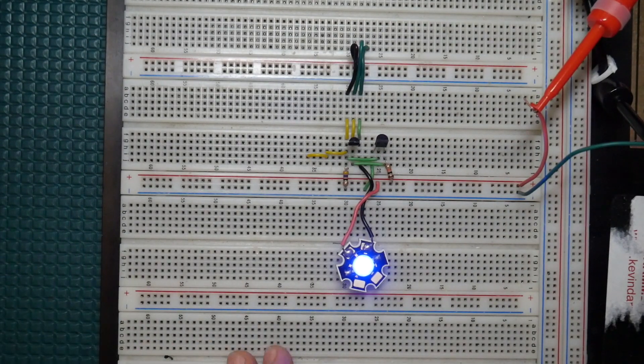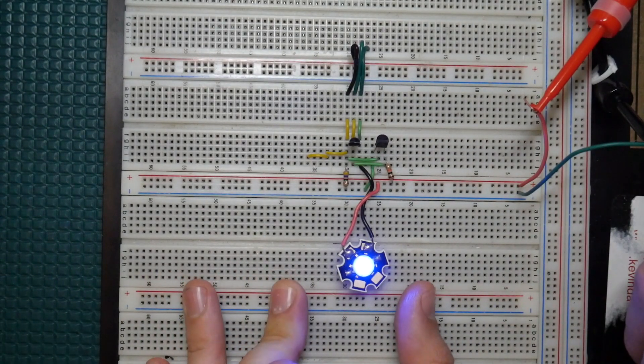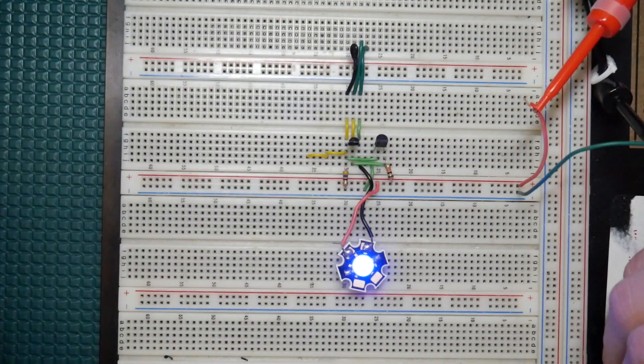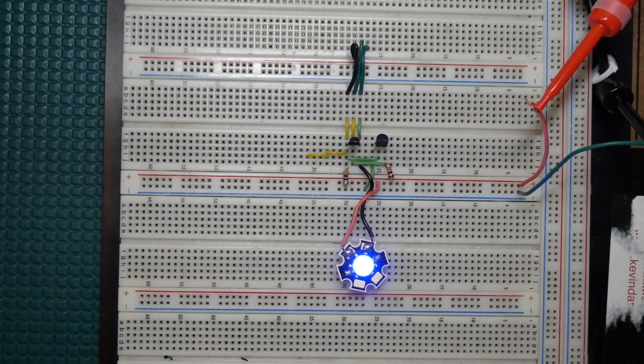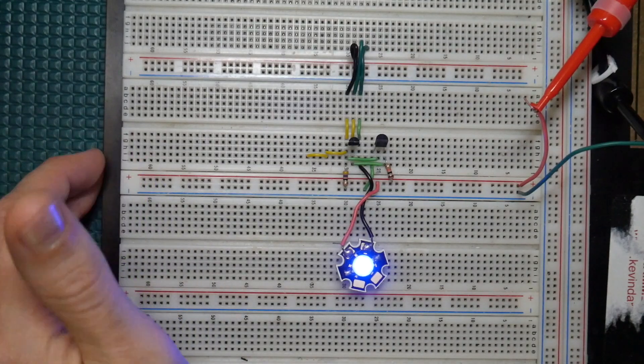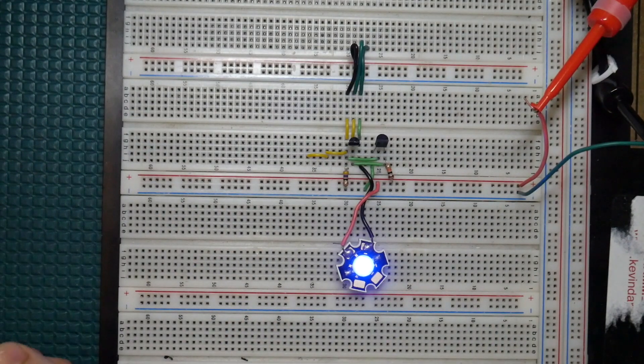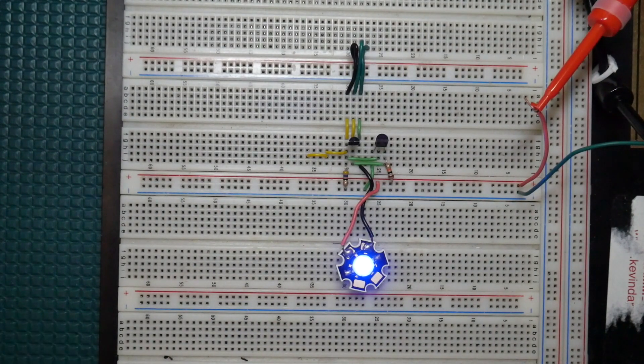So we're actually going to cause thermal runaway and catch it on the thermal camera which will help you see how that works. And then also show you why that circuit from the last video is protected. So let's get right into it.